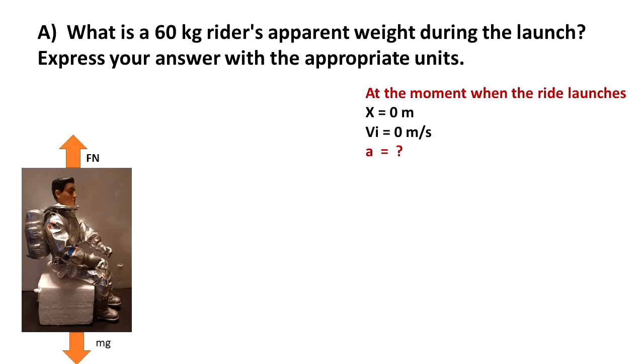Now let's see what happens at the moment when the ride launches up. The initial position is 0, the initial velocity is 0 because the person was at rest, but there is an acceleration. The acceleration was given as 4g.